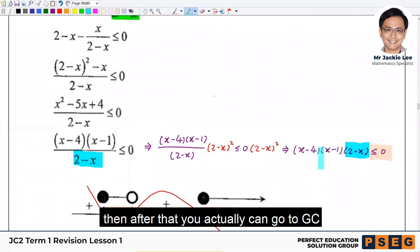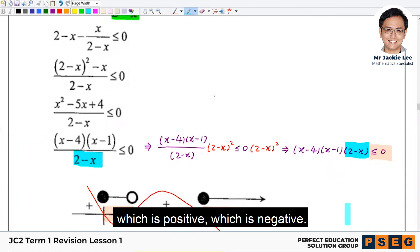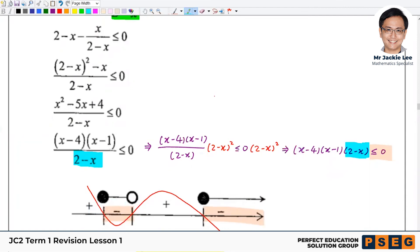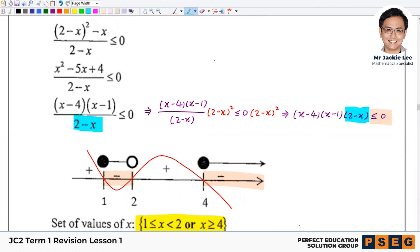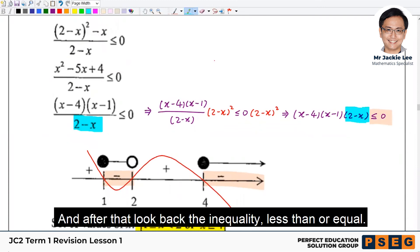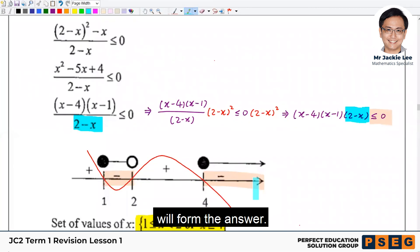Then after that, you can actually go to GC. Although actually supposedly you shouldn't do it. But you can go to GC. At least you know the shape of it. And therefore from there you can determine which is positive, which is negative. And after that, look at the inequality less than equal. So this one and this one, the part that below x-axis will form the answers.